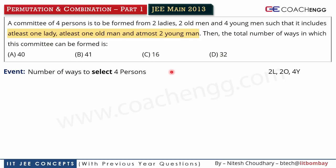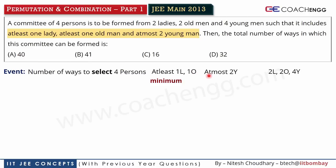So what does this mean? We need at least one lady and at least one old man. And at most two young men. At most means maximum — so at most two young men means maximum two young men. At least means minimum — minimum one lady and minimum one old man are required.